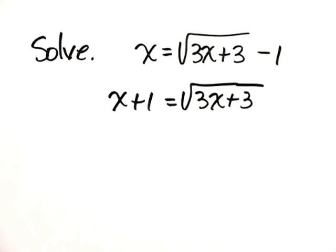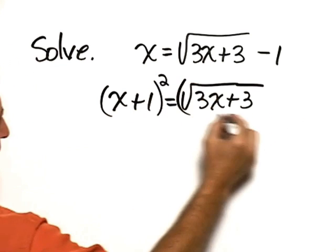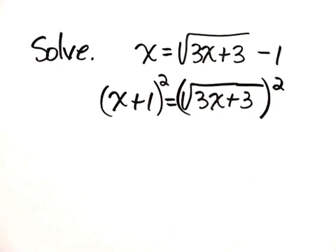Now, we square both sides. Put parentheses around the x plus 1 and square it, and then square the expression square root of 3x plus 3.